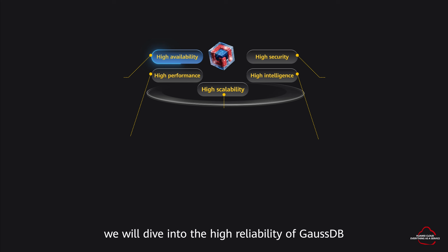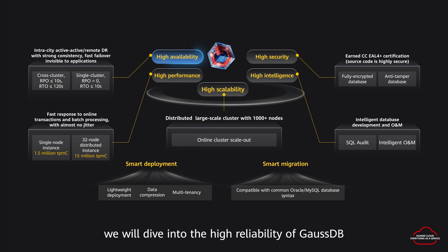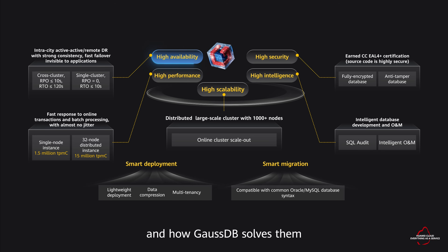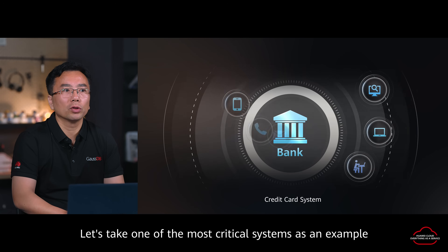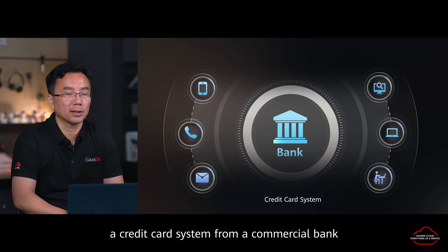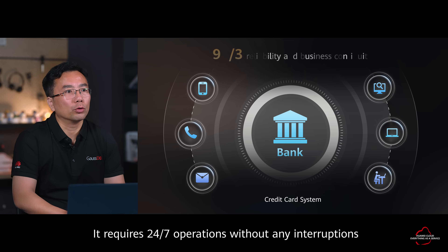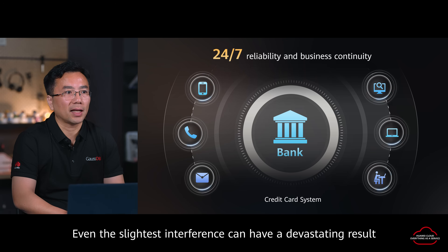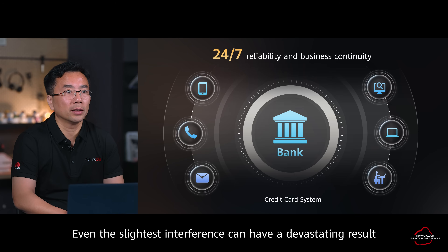In this issue, we will dive into the high reliability of GaussDB, talk about the problems customers may face and how GaussDB solves them. Let's take one of the most critical systems as an example: the credit card system from a commercial bank. It requires 24-7 operation without any interruptions. Even the slightest interference can have a devastating result.